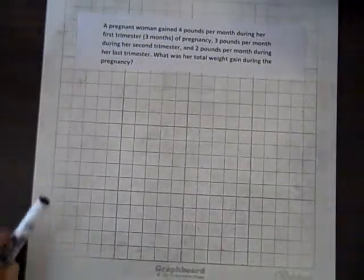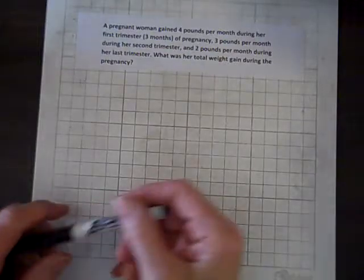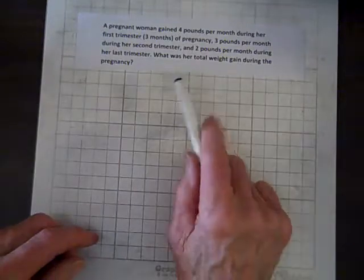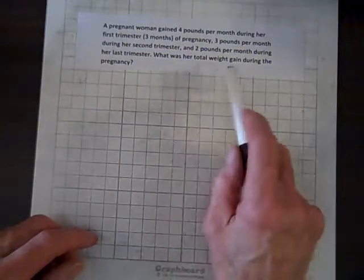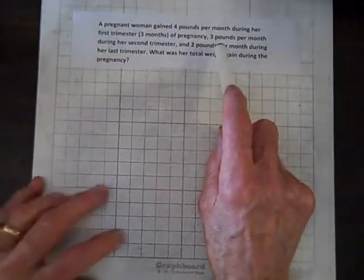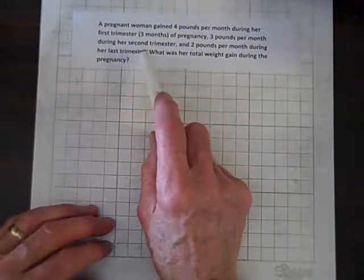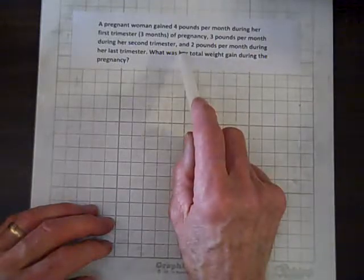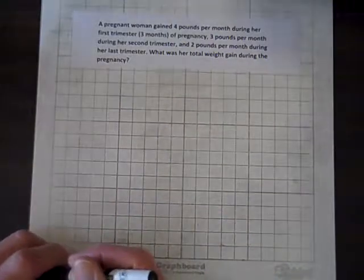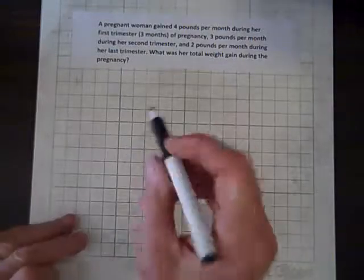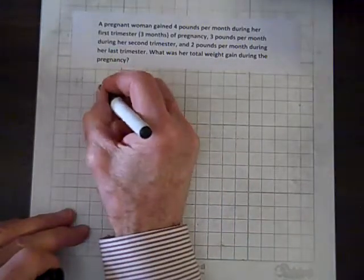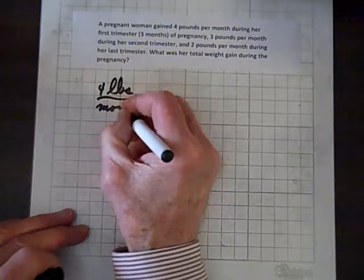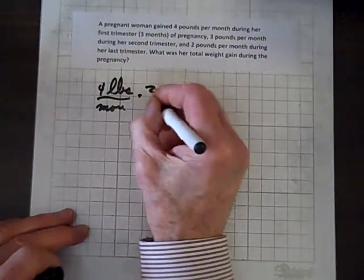Well, here's our final problem for Chapter 1. So, a pregnant woman gained 4 pounds per month during her first trimester, 3 months of pregnancy. 3 pounds per month during her second trimester. And 2 pounds per month during her last trimester. What was her total weight gain during the pregnancy? Well, let's see.